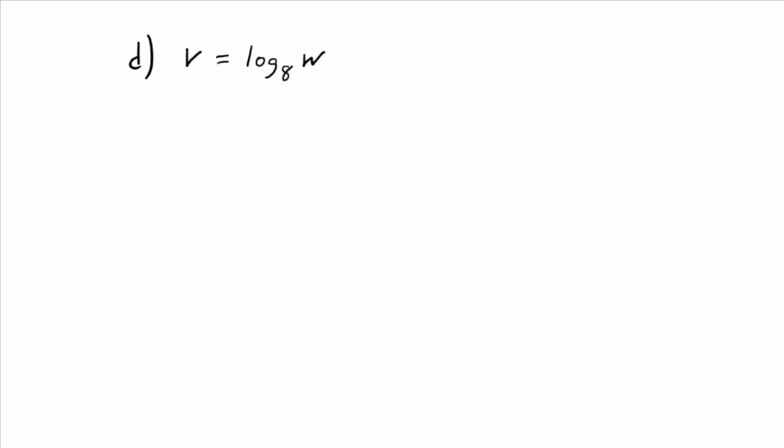Oh, this is already in log form. Let's switch it to exponential form. So see if you can go backwards. What is, think about it this way. What is the base of the exponent? You have V equals log base 8 of W. The input is W, right? The input of the logarithm is W. What's the base of the exponent going to be? It's going to be the subscript or base of the logarithm. So 8 to the, what's the exponent? V is the guy by itself. So 8 to the V equals,